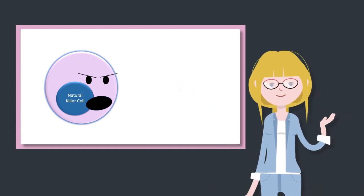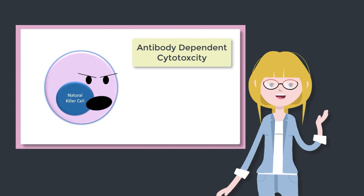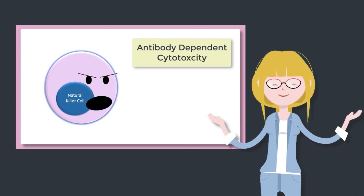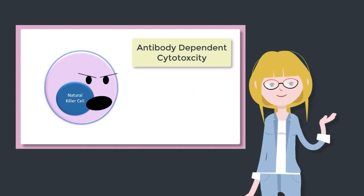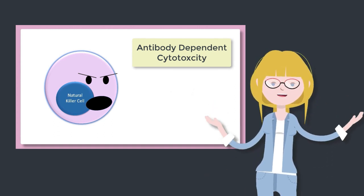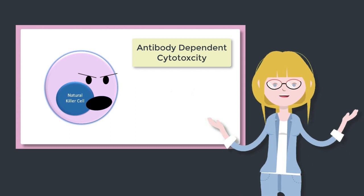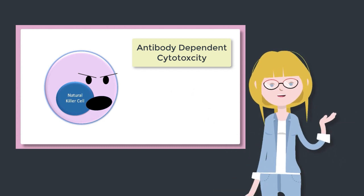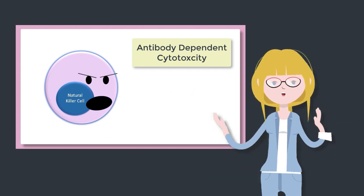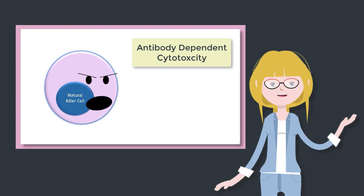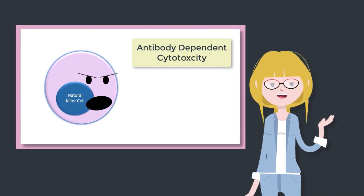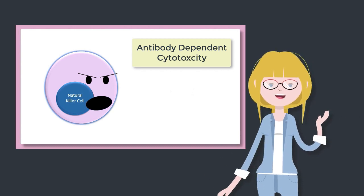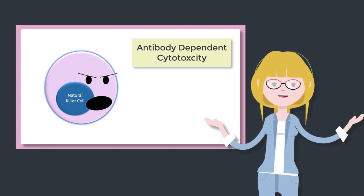The first is antibody-dependent cytotoxicity. So if an antibody is bound to a cell and a natural killer cell just happens to swing by and see that antibody, it will get in there and destroy that cell.